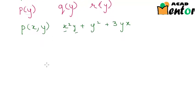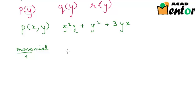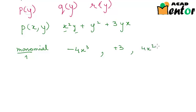Now that we know what terms of a polynomial mean, let's look at what a monomial means. We know that mono means 1, so a monomial is a polynomial with only one term. For example, minus 4x cubed is a monomial, and similarly, plus 3 is a monomial, and 4x squared is again a monomial.